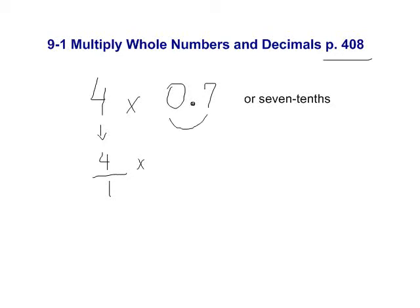How can we transform this into a fraction? Exactly how we say it, seven-tenths. I understand that we can do some cross-cancellation between the 4 and the 10. However, for today's exercise, we are just going to multiply the numerators as we see it. So 4 times 7 equals 28, and 1 times 10 equals 10.